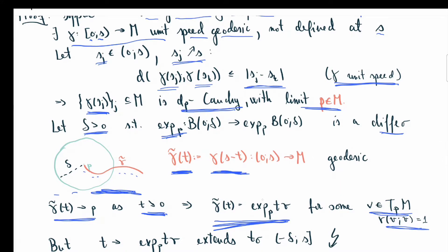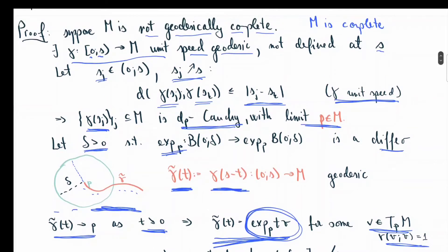This expression obviously extends for negative values all the way down to −δ, because we are in a normal neighborhood. That means I can extend my geodesic further, and this gives a contradiction — the original geodesic γ extends as well. So we're finished with the relatively easy direction.